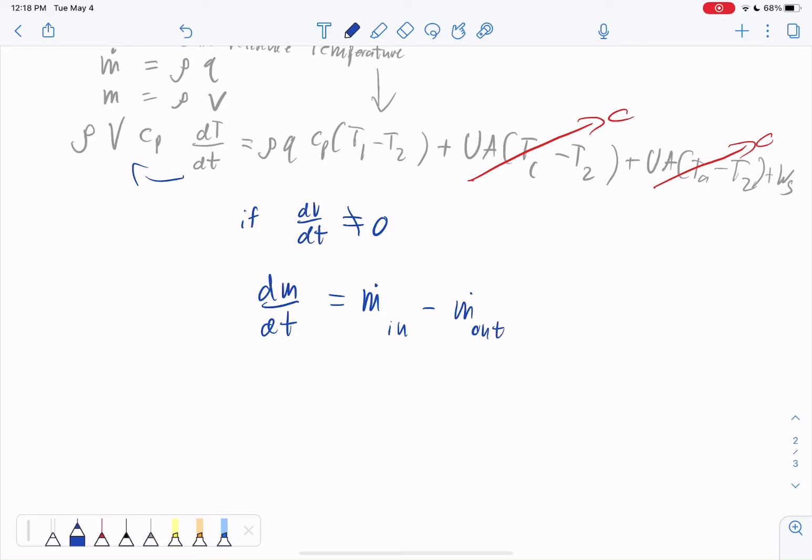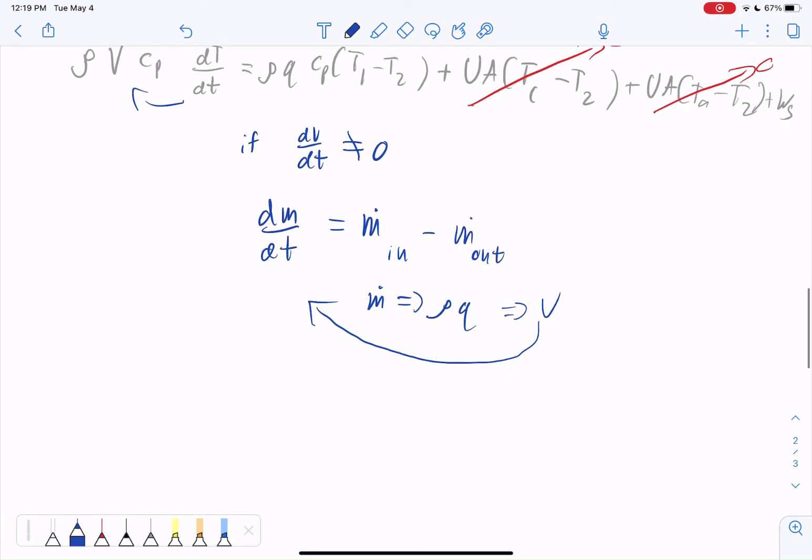And then we'd convert M dot into rho times Q. And we would use that to get a change in volume, which we would then plug back in the equation up above. Right now, we'll assume that. So let's just write our final equation now.